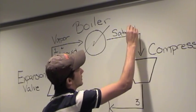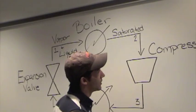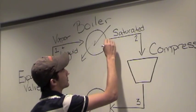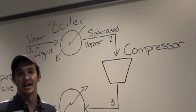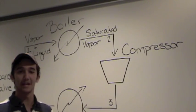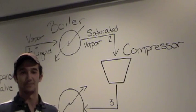From here, the R134A moves through the compressor. This takes a saturated vapor and increases both the pressure and the temperature to make it a superheated vapor.